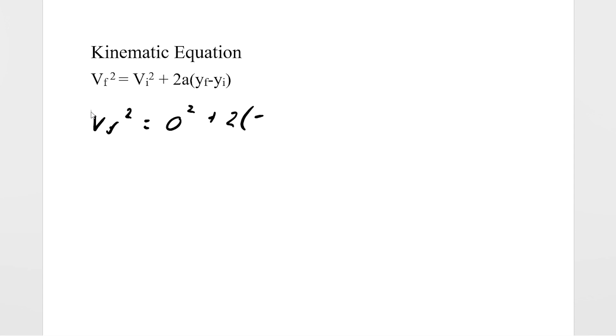Then 2 times acceleration, which is going to be negative 9.8 meters per second squared, because we're assuming that the acceleration is the same as that on Earth. Then y final minus y initial, well, our y final is going to be zero because that's where Steve lands, and the y height that he started at is 23 meters.